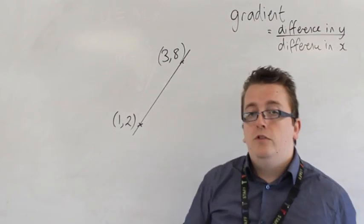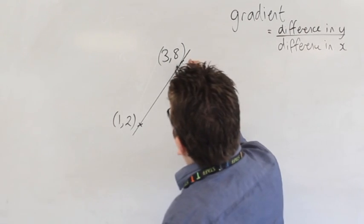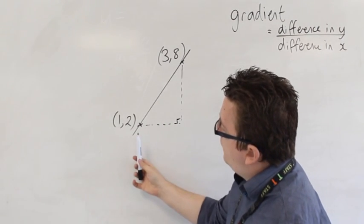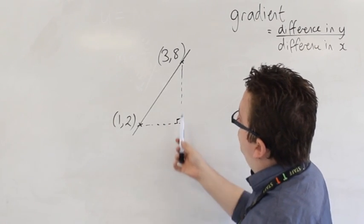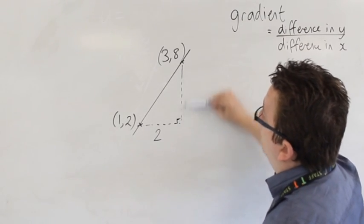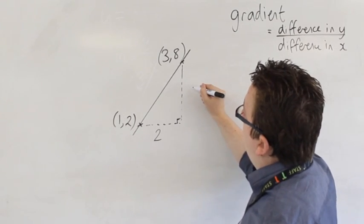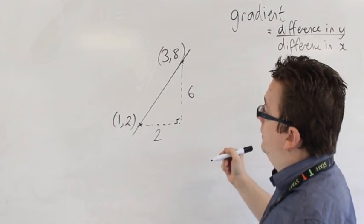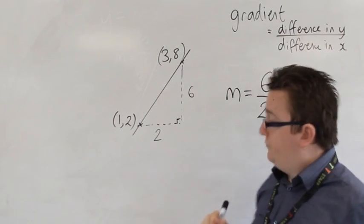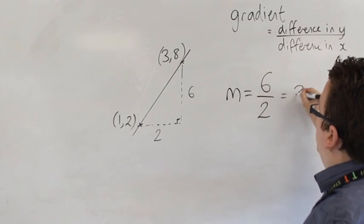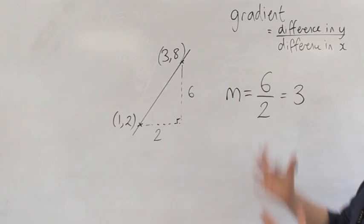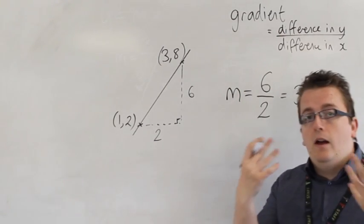So what I could do is draw myself a little right-angled triangle and say to myself, well, it's gone from the X-coordinate 1 to X-coordinate 3, so I have gone from Y-coordinate 2 to Y-coordinate 8 - that's 6 from 2 to 8. So M is equal to the difference in Y divided by the difference in X, and 6 over 2 is just 3. So in this case, the gradient would be 3, and in this way you can calculate the gradient.